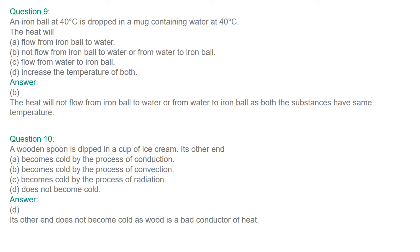Question number ten: a wooden spoon is dipped in a cup of ice cream. Its other end: (a) becomes cold by conduction, (b) becomes cold by convection, (c) becomes cold by radiation, or (d) does not become cold. The answer is D — its other end does not become cold, as wood is a bad conductor of heat.